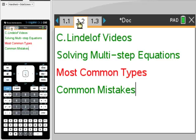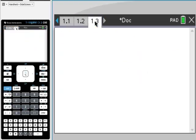We're just going to do maybe five or six examples of common types of multi-step equations. And I want to show you some common mistakes and just some things to note. So we're going to start off by using this solve function.